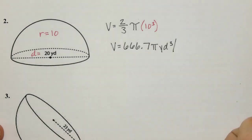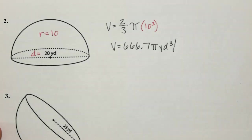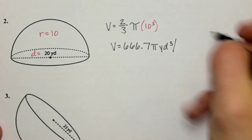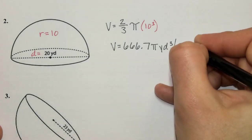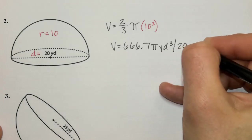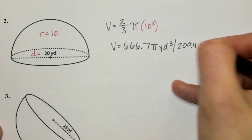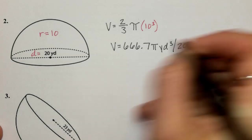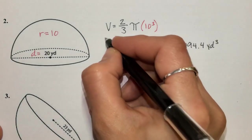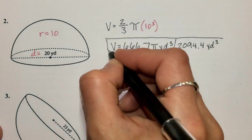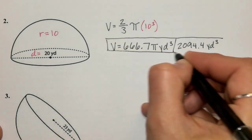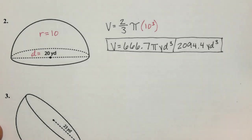Pause and go back to plug in the pi symbol so you can get the rounded answer as well. We get 2,094.4 yards cubed. Remember: when doing in terms of pi, you don't plug in the pi symbol, so the result will always be smaller than once you actually include pi.